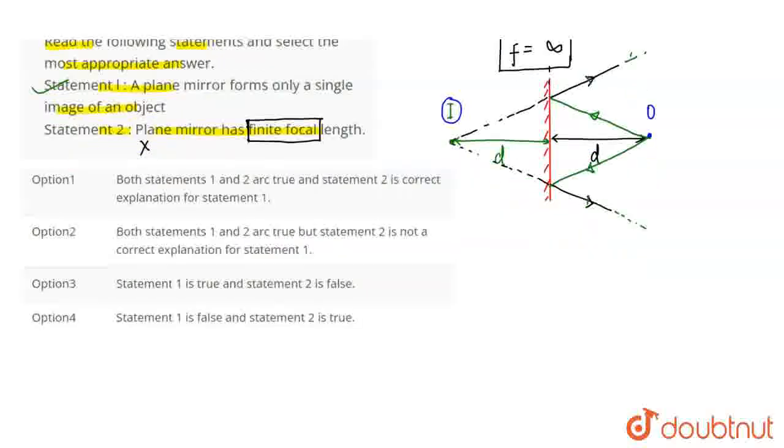Statement 1 is right and statement 2 is wrong. It means option number 3 is the right answer. Statement 1 is true and statement 2 is false. So we need to remember this. Thank you.